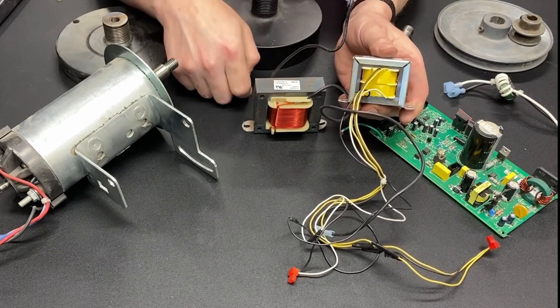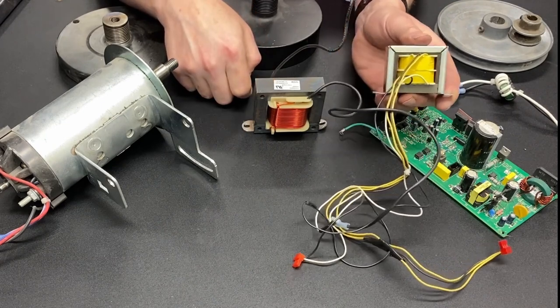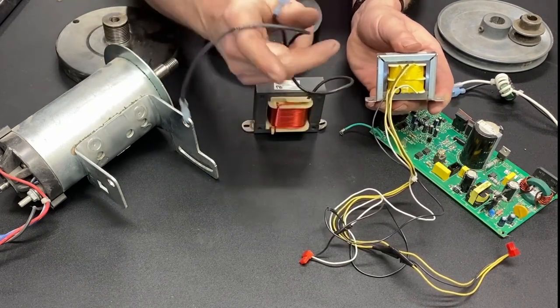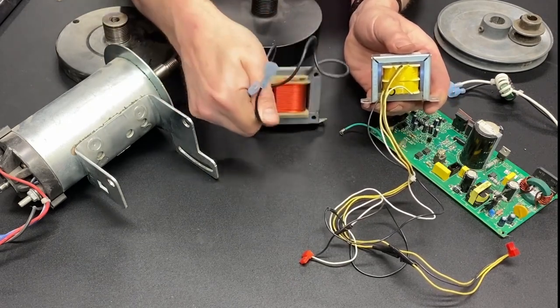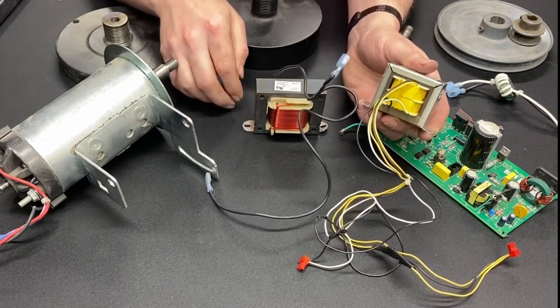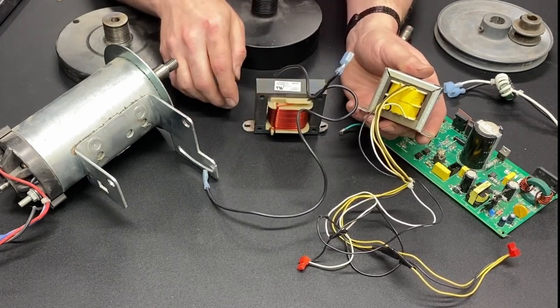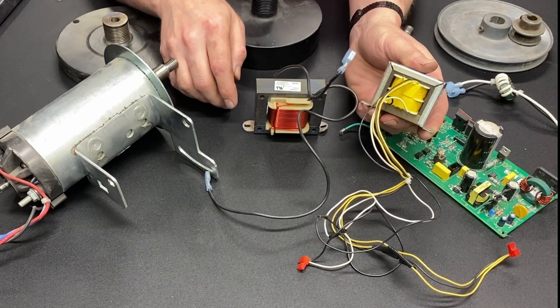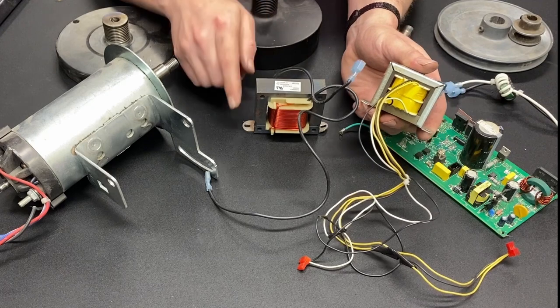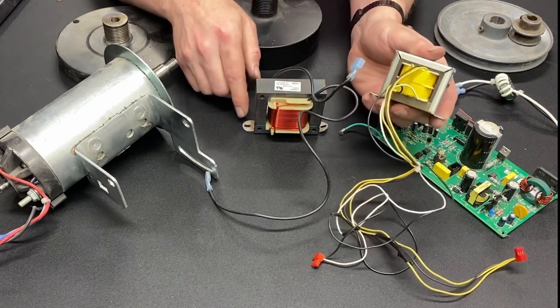And, the only way that you can tell the two apart is to count the wires. A motor choke will have two. Power flows in on one side and out on the other. A transformer will have anywhere from three to six to eight wires in it. So, two wires is a choke. Three or more wires is a transformer.